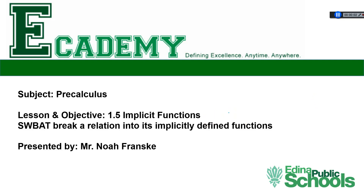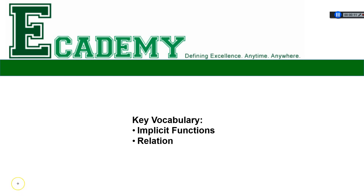Hey everyone, Mr. Franski here. Today we're going to be talking about implicit functions, which we're slowly rounding out section 1.5. Sections 1.4 and 1.5 kind of run together a little bit. Some of the vocab we'll have today: implicit functions and relation. A relation is something that relates x and y — like y equals x squared is a relation, and it also happens to be a function. Anything with x's and y's that has certain points that work and certain points that don't — that's a relation.